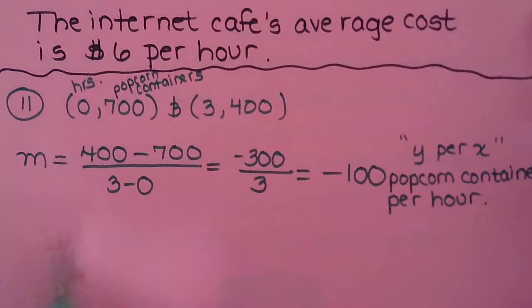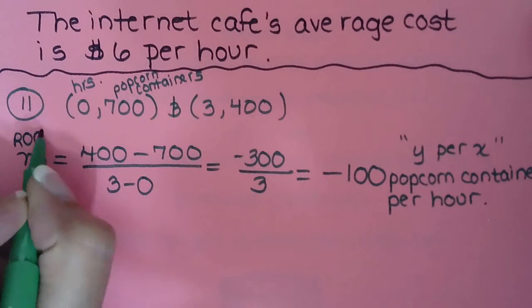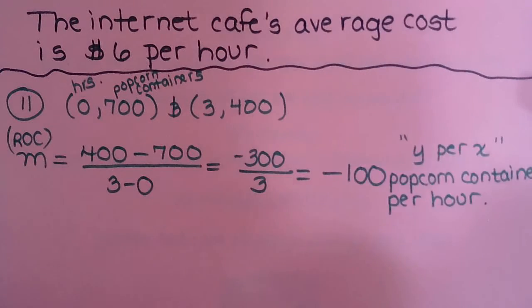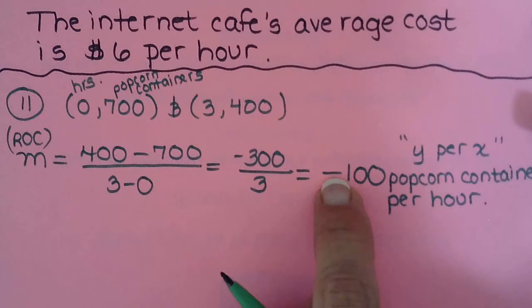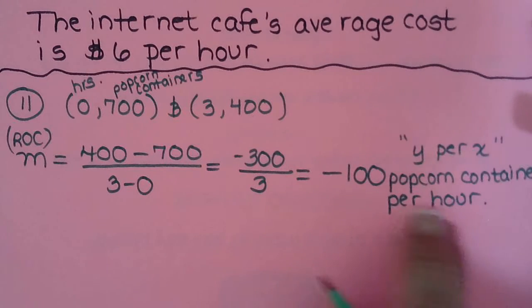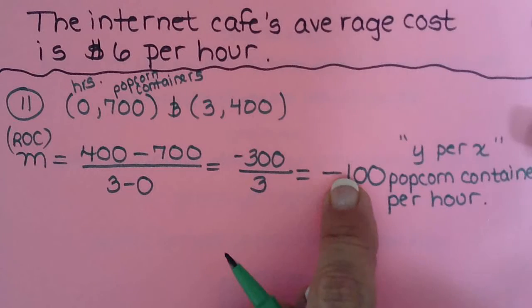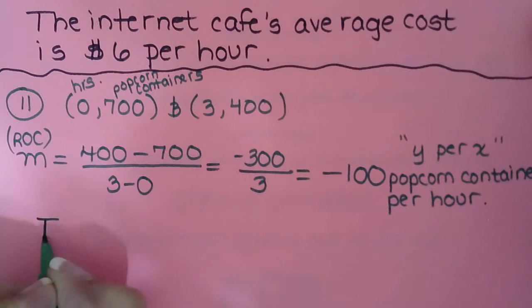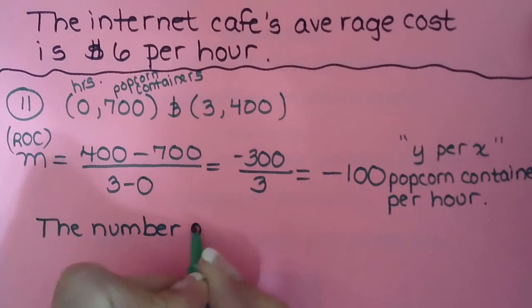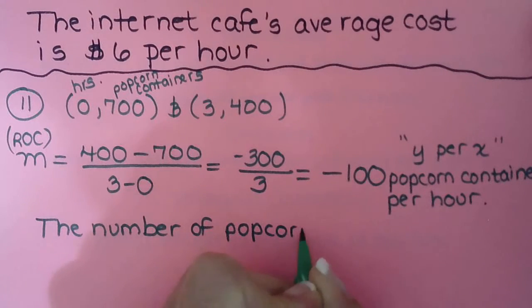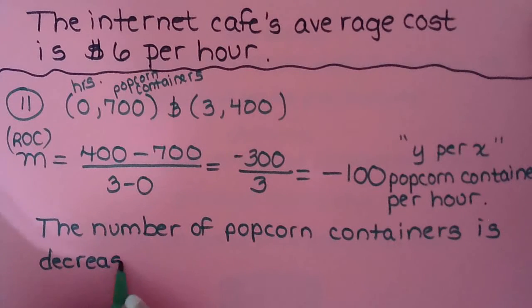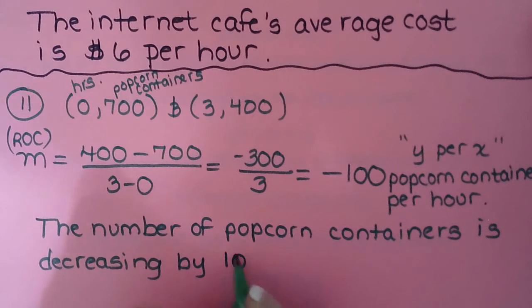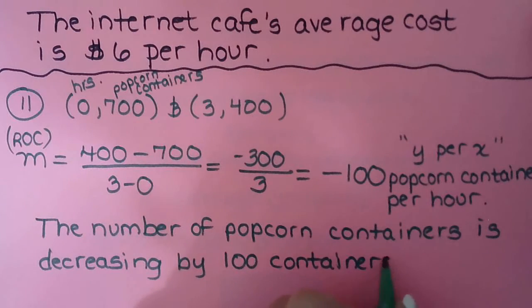So we never in a sentence use the negative. So when we're writing rate of change, yes, we use the negative. And I switched to m here instead of rate of change, didn't I? I mean, they're the same thing, but I really should be using rate of change since the problem does. So we could say the number of popcorn containers is decreasing by 100 containers per hour. How about that? So we can't use the negative. We use a word that means negative, like decreasing.